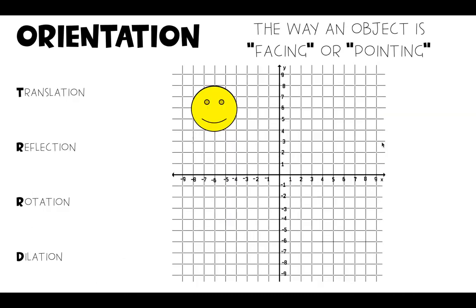So let's look at the four transformations to see if the orientation changes for each of them. So if we translate our smiley face, our smiley face is right side up in our original. In our new image, is our smiley face still right side up? Yes. So the orientation is preserved. It does not change.